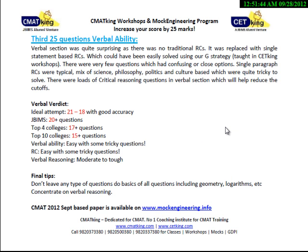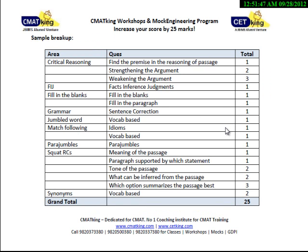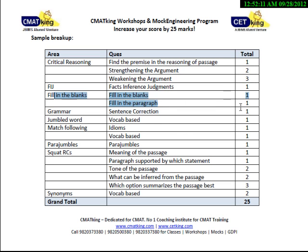The verbal section, section 3: short RCs — 10 questions; critical reasoning — 6 questions. These 16 questions out of 25 are going to make or break your career. Please go through the 110 short RCs on our site and the critical reasoning bridge concept. Apart from that: fill in the blanks — 2 questions; vocab based — 2 questions; jumbled sentences — 1 question; idioms — 1 question. Please go through them all again.